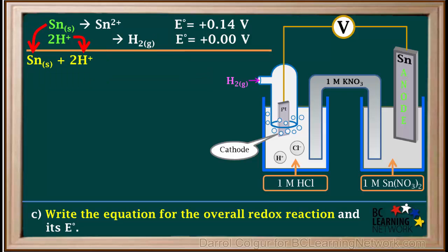On the left side, we have Sn solid and 2H⁺. And on the right side, we have Sn²⁺ and H2 gas. To find the overall E°, we add up positive 0.14 and 0, giving us positive 0.14 volts.